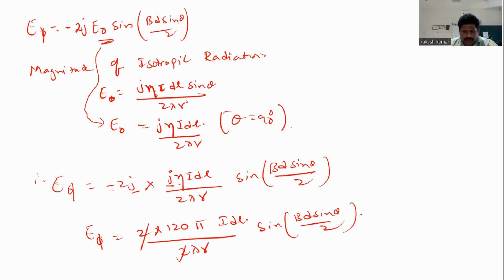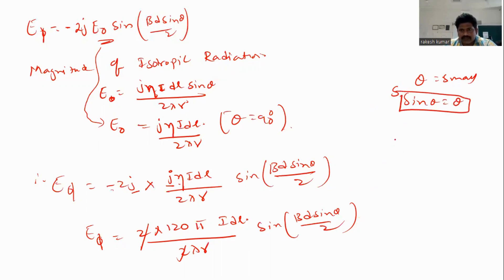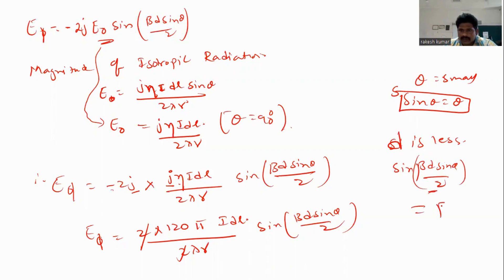Now, if the separation distance d is very, very small, then sin(β·d·sin(θ)/2) can be approximated as β·d·sin(θ)/2. This is because we are dealing with a small loop antenna, where the dimensions of the loop are very, very small compared to the wavelength λ. That is why we take d as very, very small.